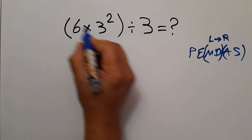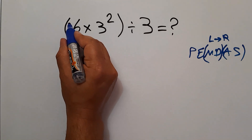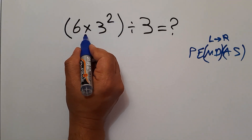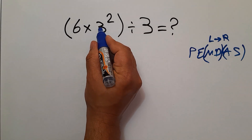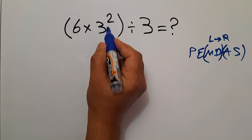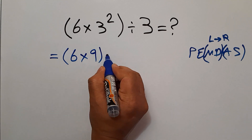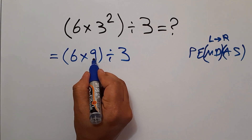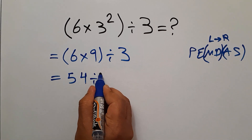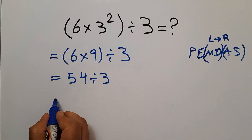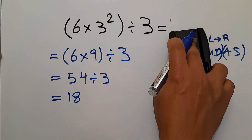In this expression, we have these parentheses and this division. According to PEMDAS, first we have to handle these parentheses. Inside these parentheses, we have this multiplication and this exponent. First, we do 3 squared. 3 squared equals 9. So, parentheses: 6 times 9, divided by 3. 6 times 9 equals 54. So, 54 divided by 3, and this is equal to 18. So, our final answer to this problem is just 18.